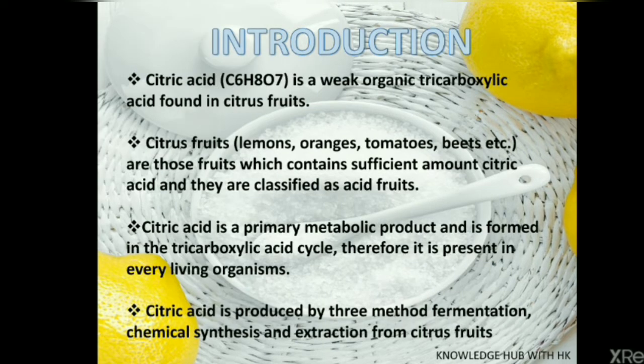Moving on to its introduction, citric acid is a weak organic tricarboxylic acid found in citrus fruits like lemon, oranges, tomatoes, and others which contain a sufficient amount of citric acid and are classified as acid fruits. Citric acid is a primary metabolic product and is formed in the tricarboxylic acid cycle. Therefore, it is present in every living organism.